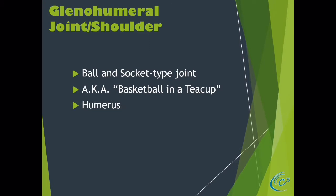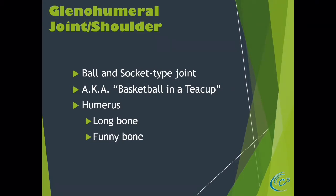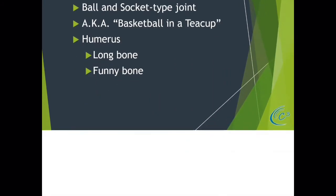We have the humerus, which is the long bone in the upper extremity, and it ends in the funny bone. For those of you who have struck your funny bone, you know there's nothing funny about it. Basically, that's a contusion to the ulnar nerve at the backside of the elbow, which causes that numbness feeling. It really is pretty uncomfortable.